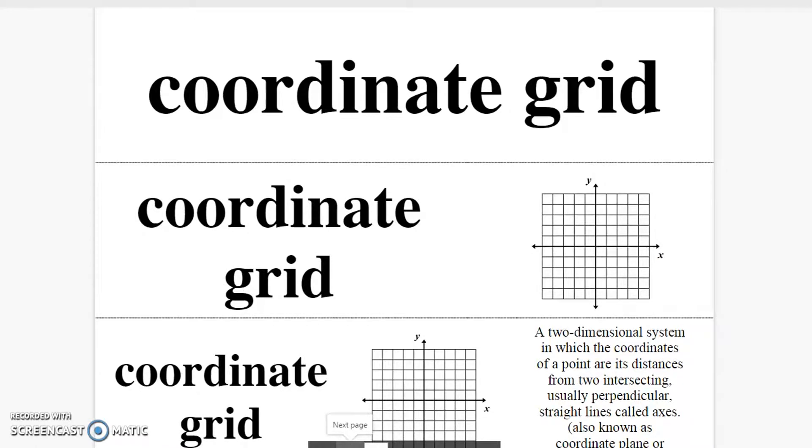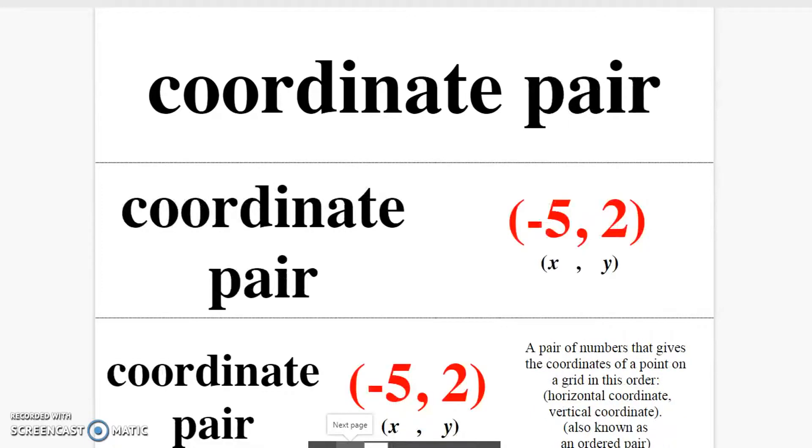Coordinate grid. A two-dimensional system in which the coordinates of a point are its distances from two intersecting perpendicular straight lines. Coordinate pair. A pair of numbers that gives the coordinates of a point on a grid in this order.